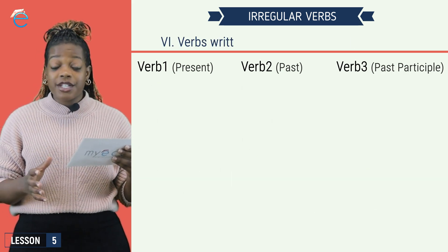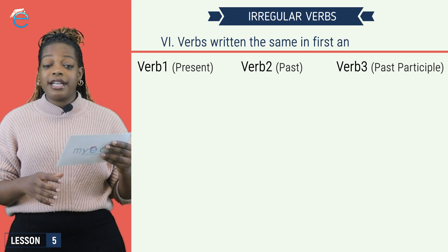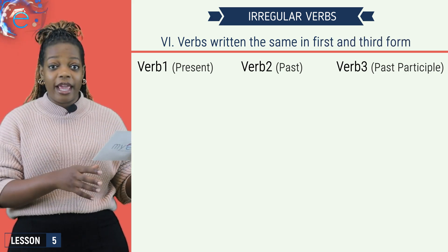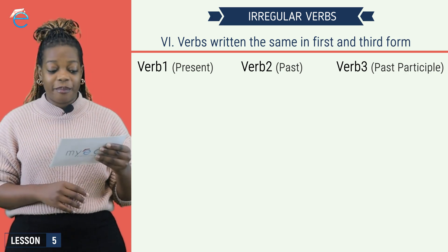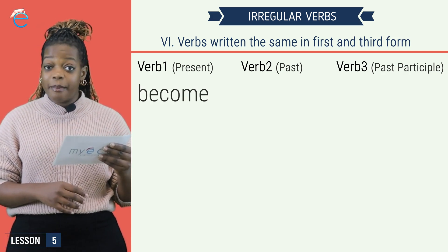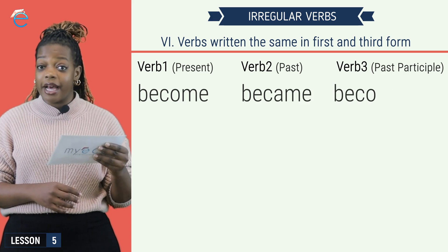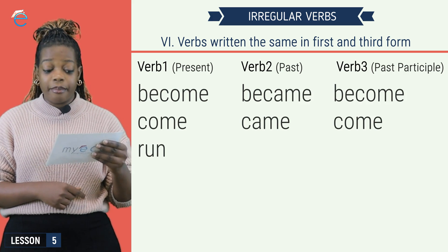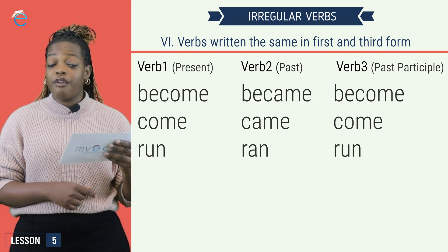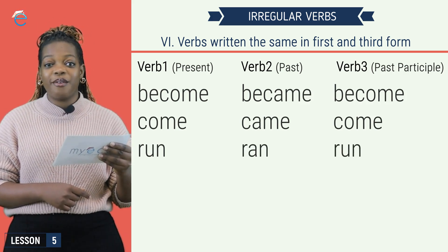Group 6 are irregular verbs that are written in the same way in verb 1 and verb 3 form. Become, became, become. Come, came, come. Run, ran, run.